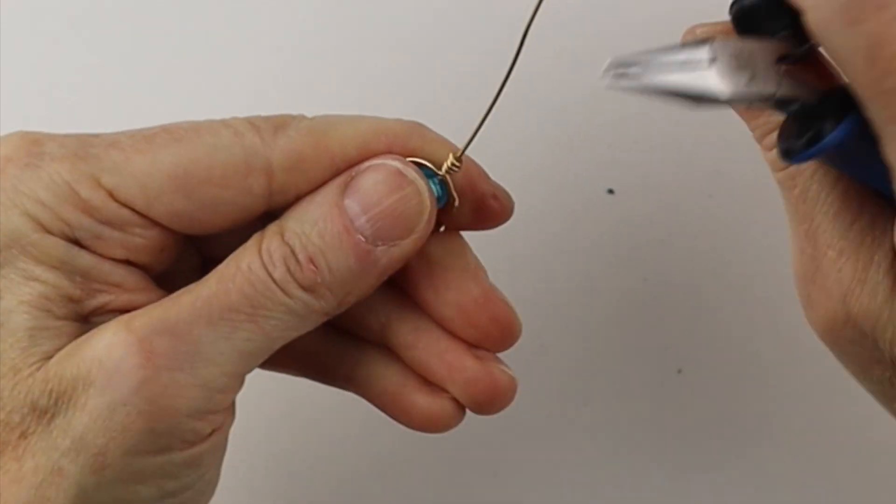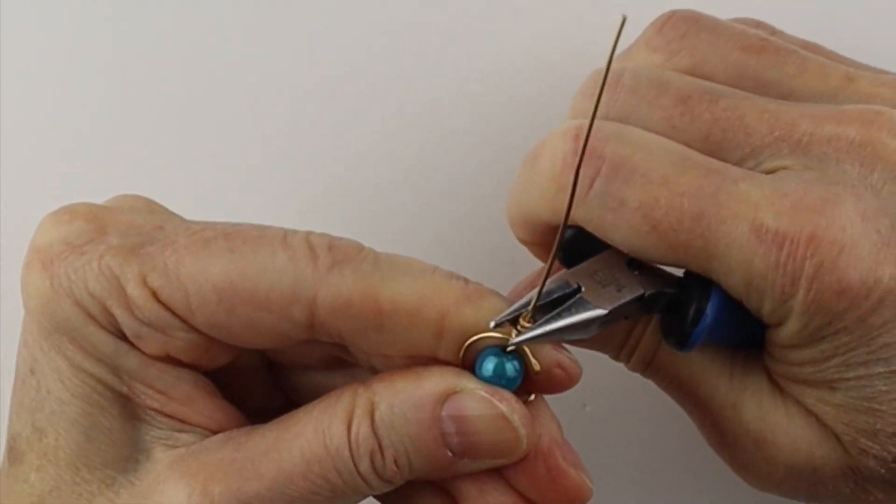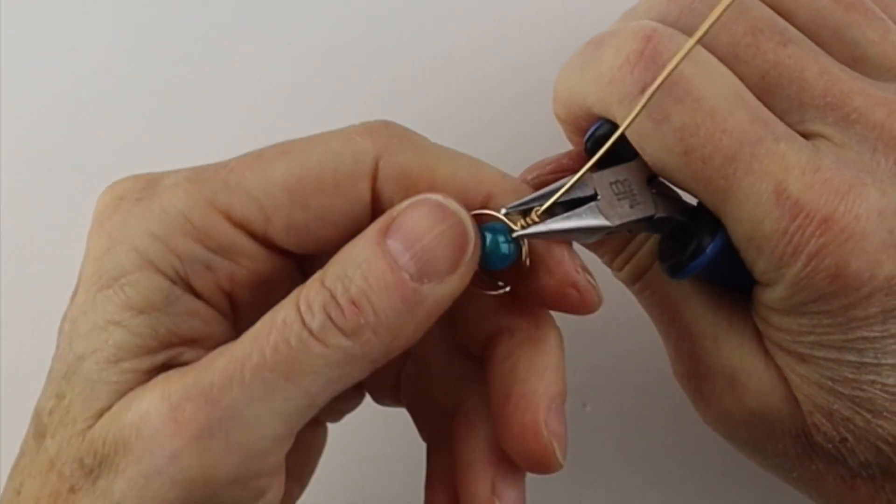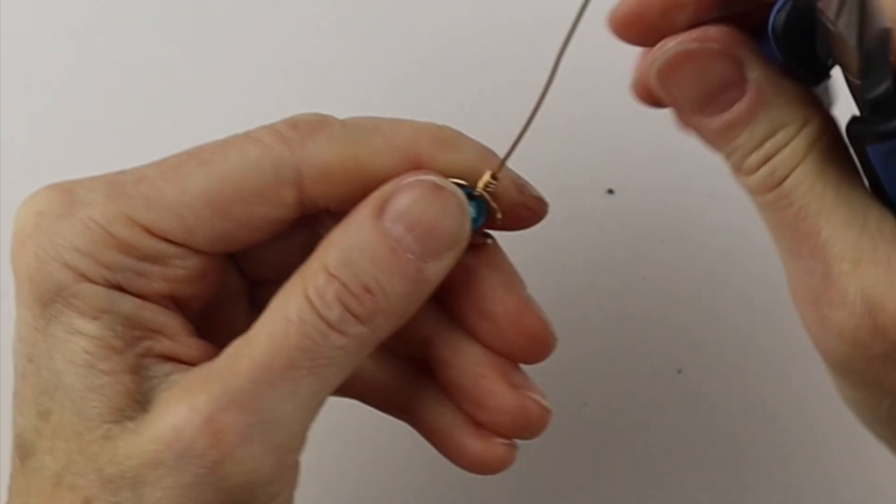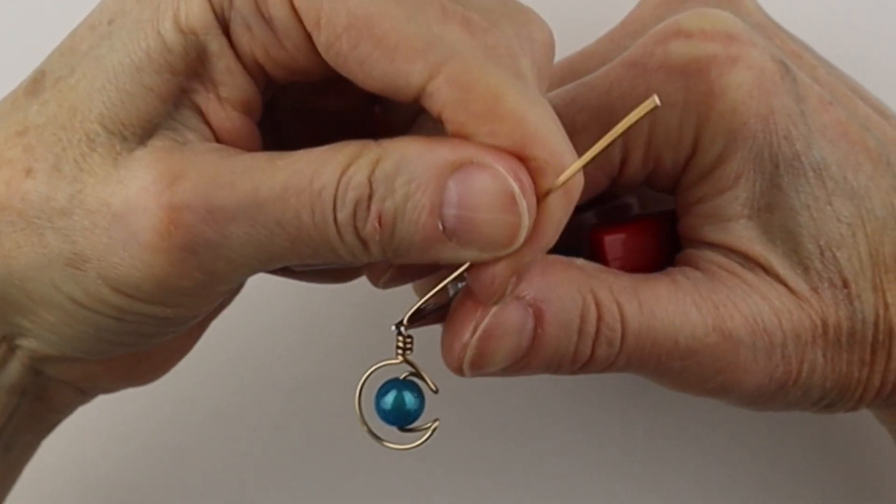Clip it, and we can just pinch that in a little bit more, straighten it out. If this got a little distorted, you can unwind it a little bit. And if that's going that way, we want to bend this the opposite way.